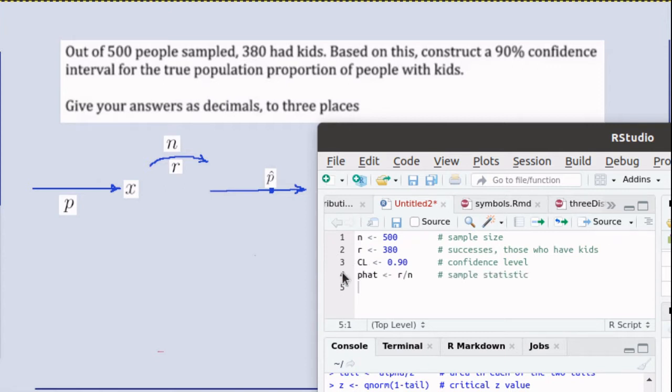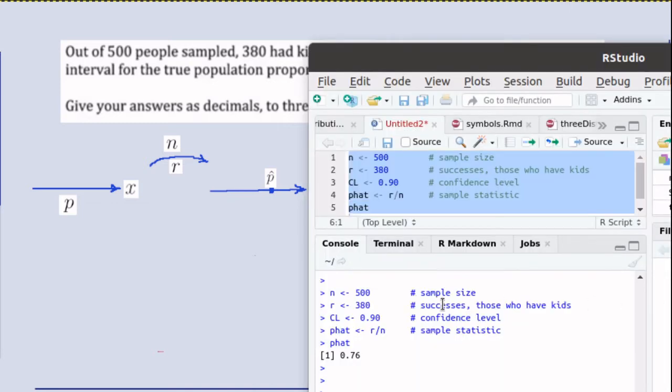But once we've got that information we could ask R to find what our p hat is. In many of your written reports you'll be expected to shout out the sample statistic. So let's just run that to see where it fits. When we run that script we see that p hat is about 0.76.